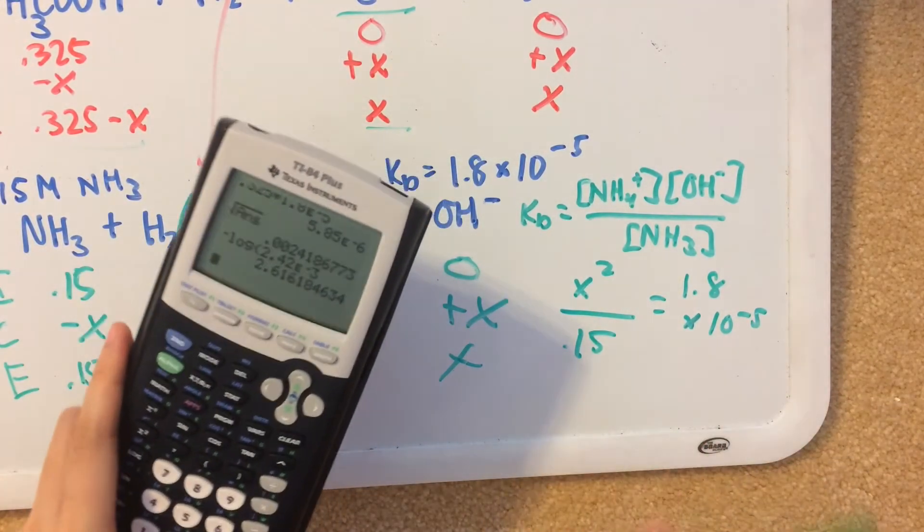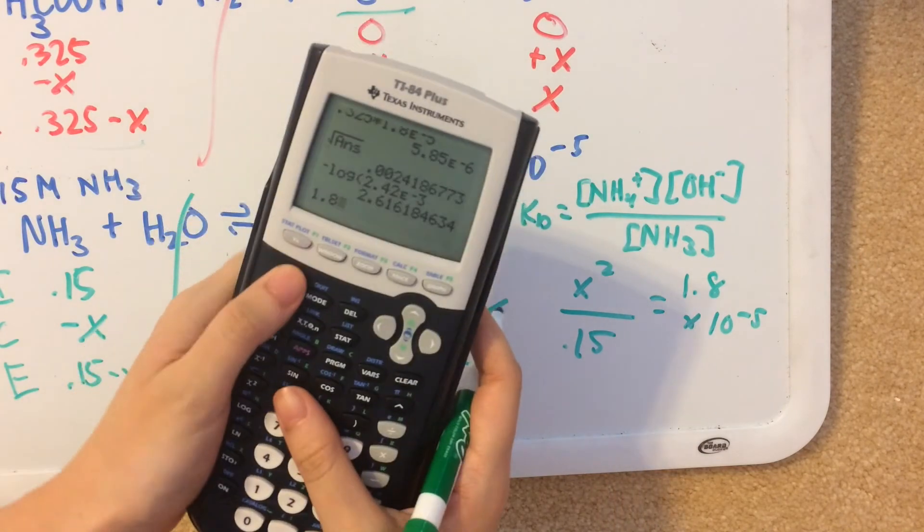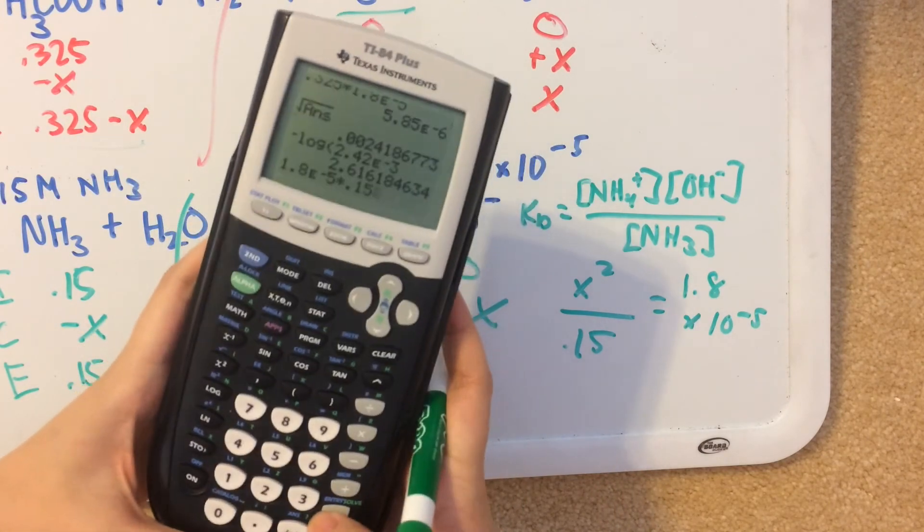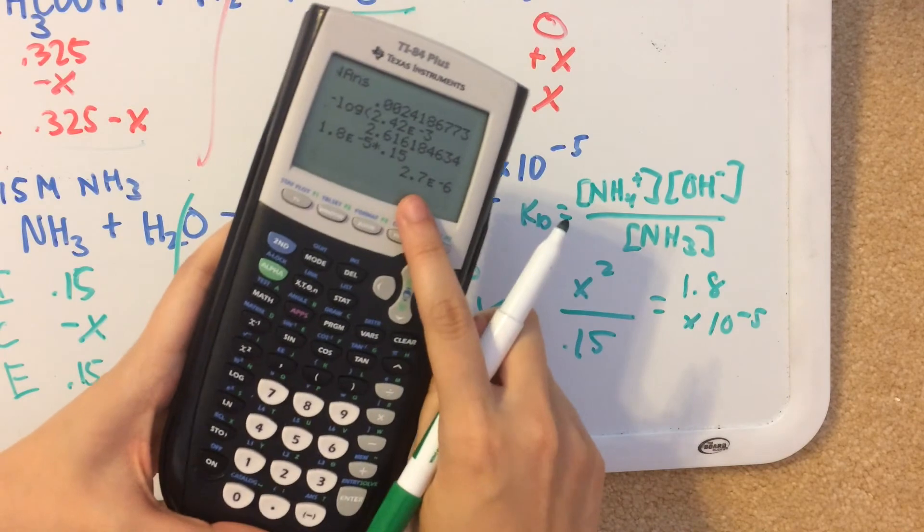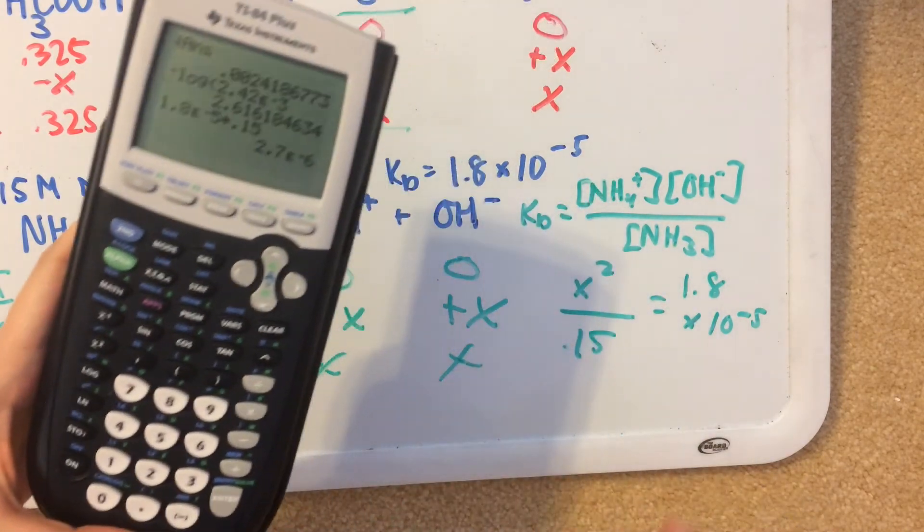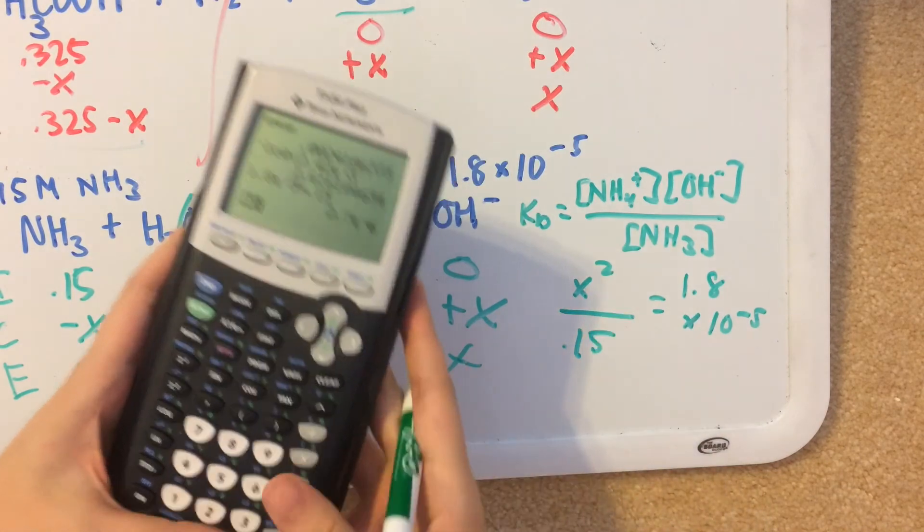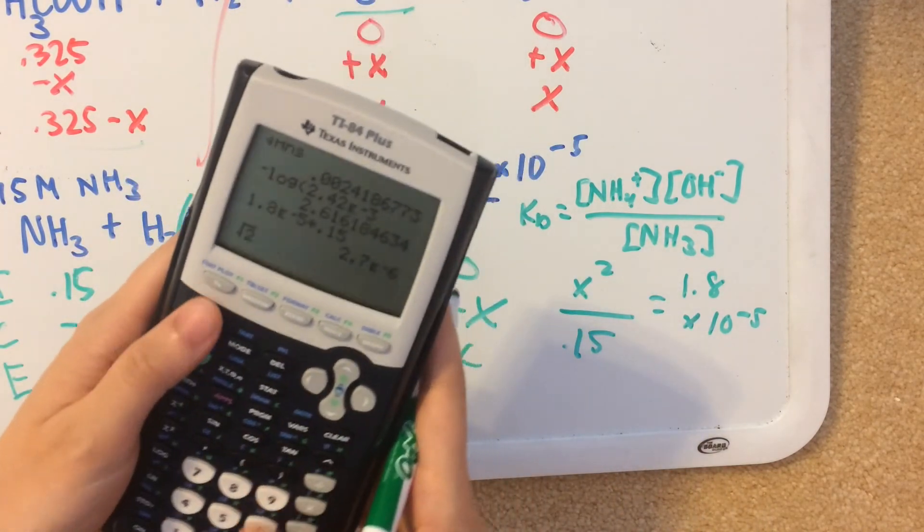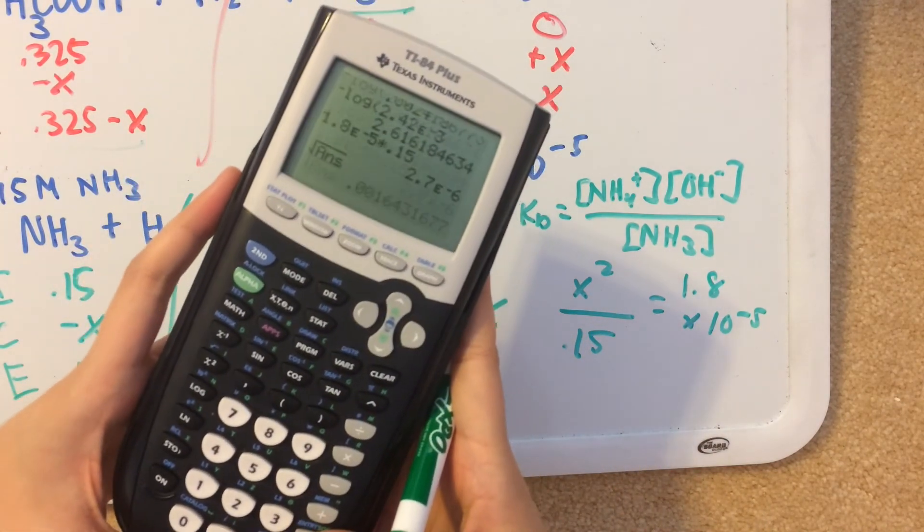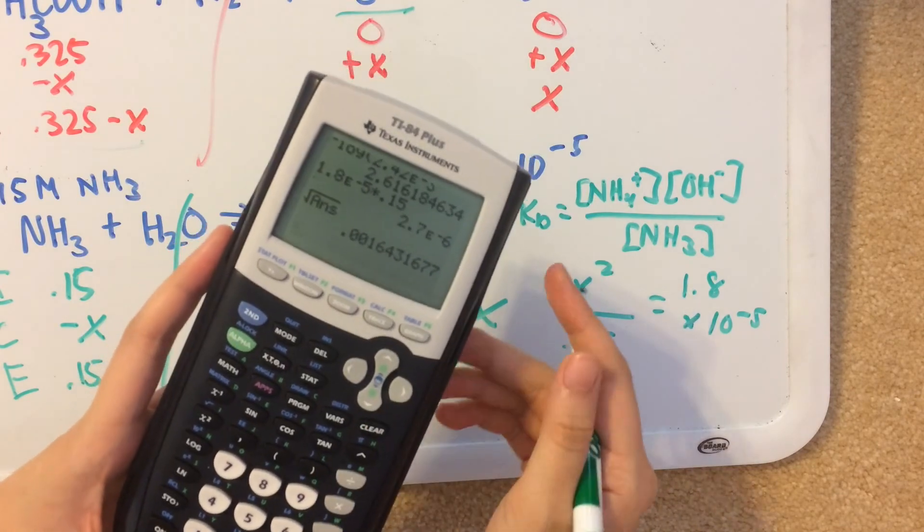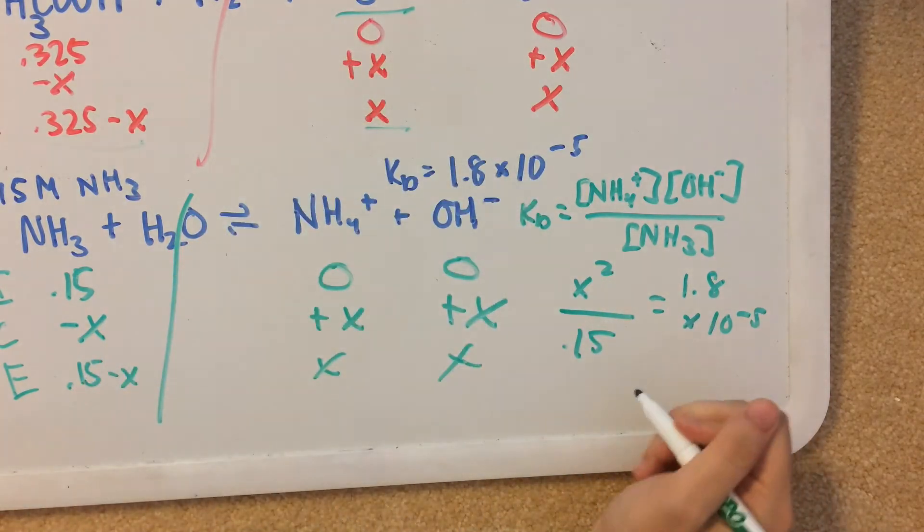We multiply both sides by 0.15, giving us about 2.7 times 10 to the negative sixth. Then we take the square root of that because we have that set equal to x squared. And we have about 1.64 times 10 to the negative third.